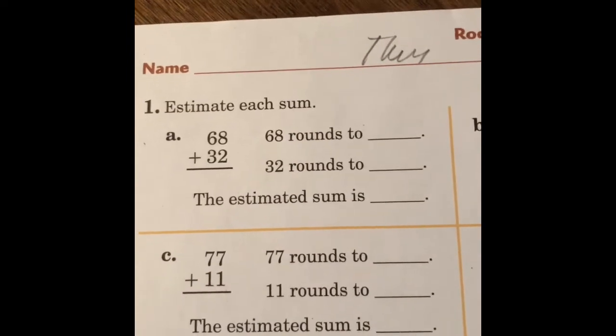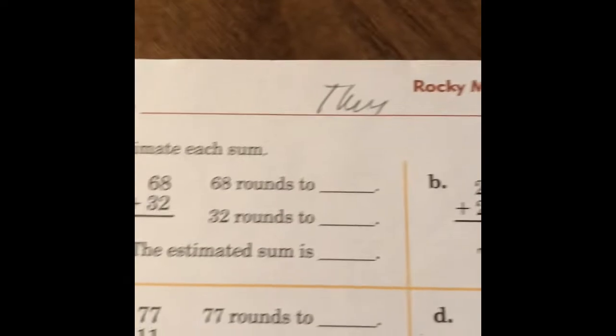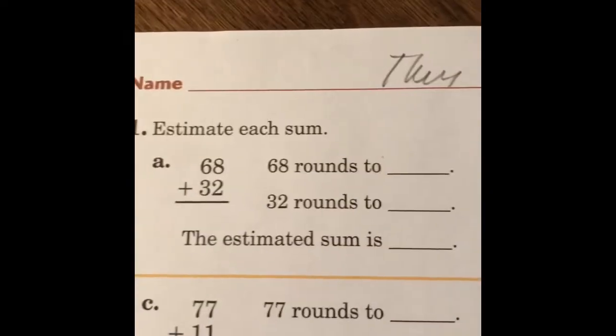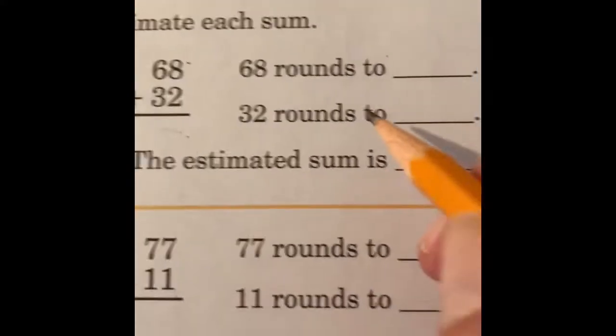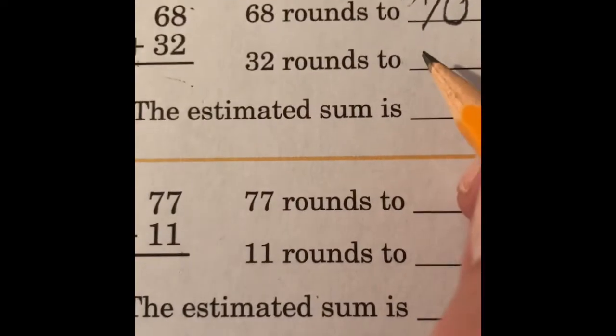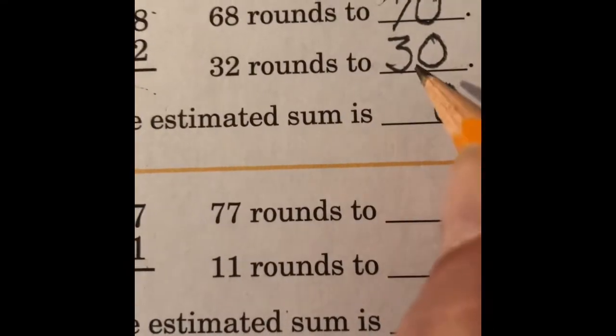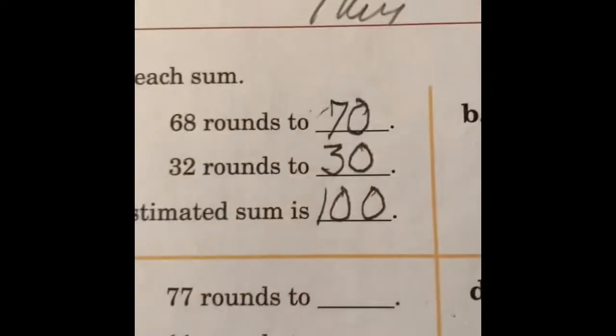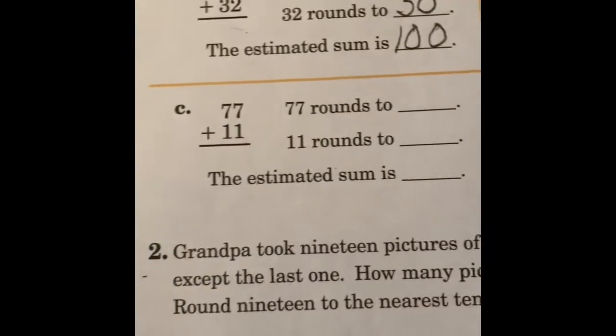Estimate each sum. We've been doing the estimating for a while now. So, remember, you're going to estimate 68 rounds to what? 68. 8 is the big number here. 8 is the big number. So, you know 68 is going to go to the higher number. So, 68 is going to round to 70. 32 is the lower number. 2 is the lower number. So, 32 is going to round to 30. Add them together and your answer would be 100. And that's how you do that one. Right next to it and the one underneath it. And D. All the same way.